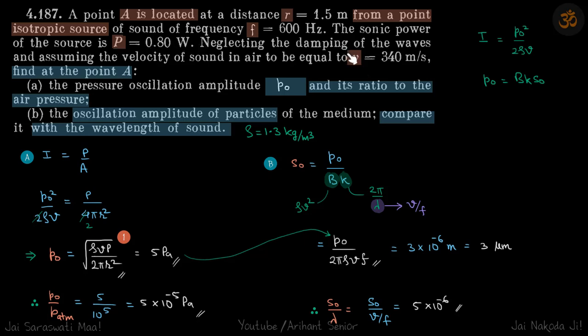We need P₀ and power is given, so we are going to use the formula which we just derived in problem 4.185: intensity (average intensity) is P₀²/2ρv. For the second part, because we need oscillation amplitude, we also should know that P₀ = Bks₀. We have the intensity, so we can relate it with the power. Let's begin.